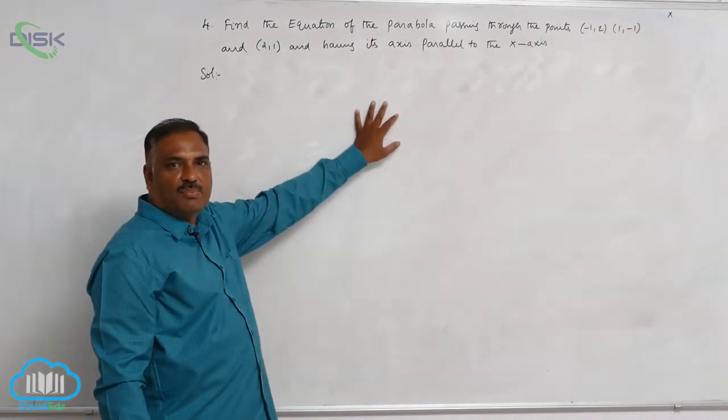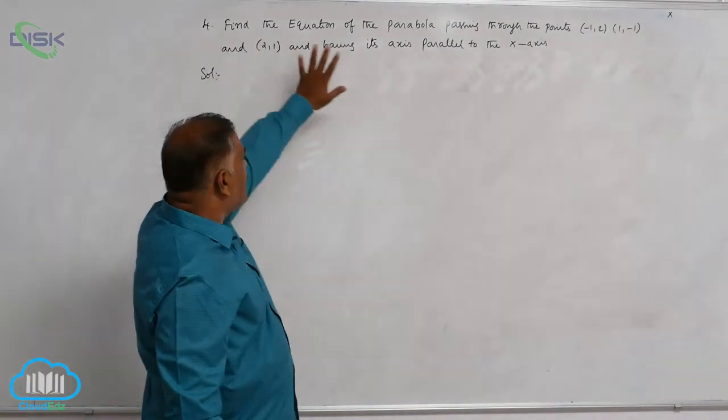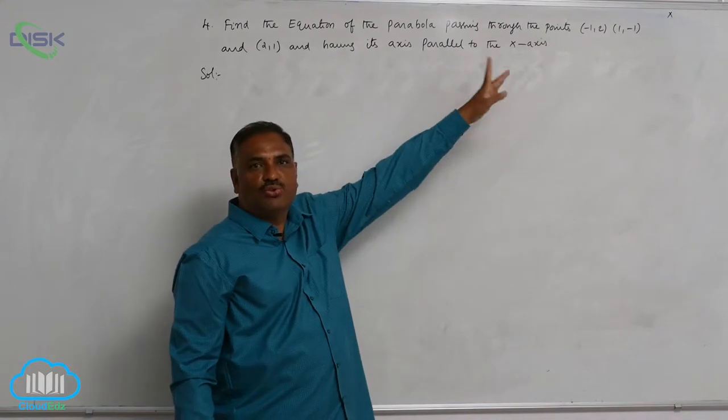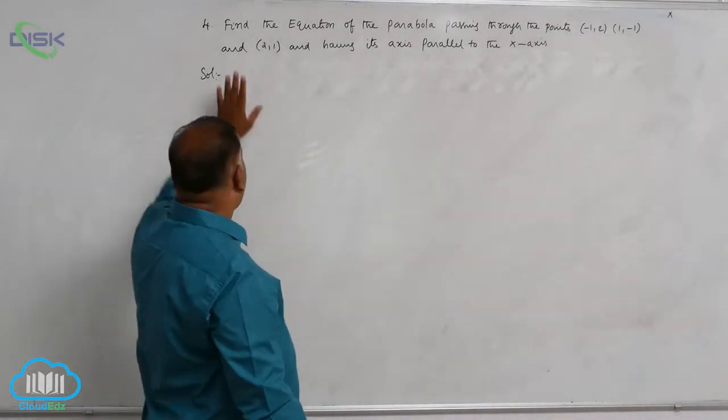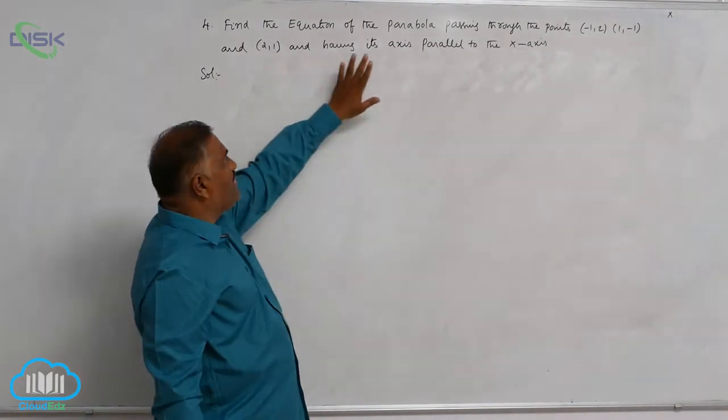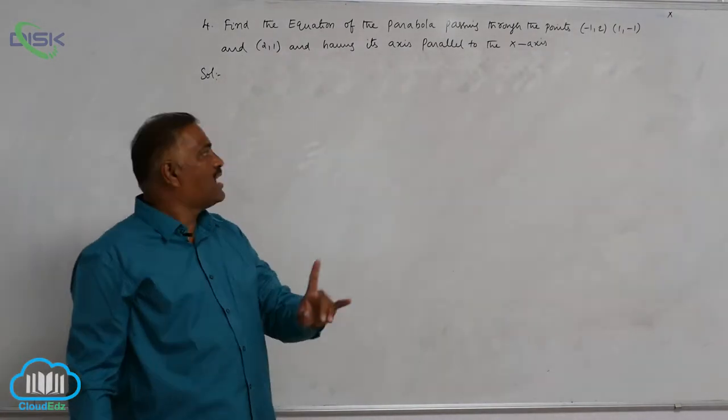Let us discuss one important problem of the parabola. Find the equation of the parabola passing through the points (-1, 2), (1, -1) and (2, 1) and having its axis parallel to the x-axis.